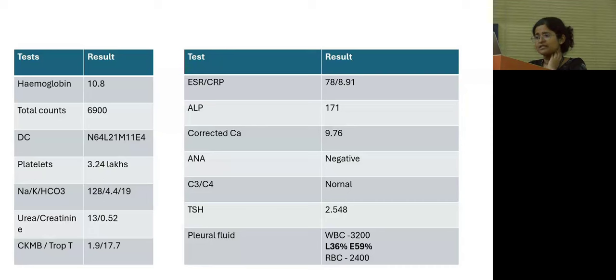ESR-CRP was noted to be elevated. ALP was elevated. Corrected calcium was noted to be 9.76. ANA was negative. C3-C4 was normal. TSH was noted to be 2.548.